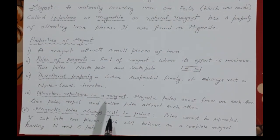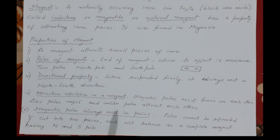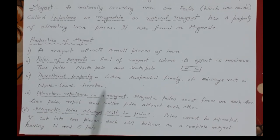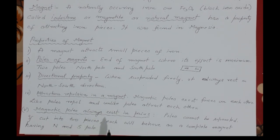Those are all five common properties of a magnet. This was a recap so that you don't get confused when other things are discussed in this chapter. Thanks a lot.